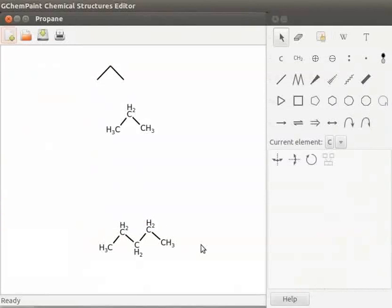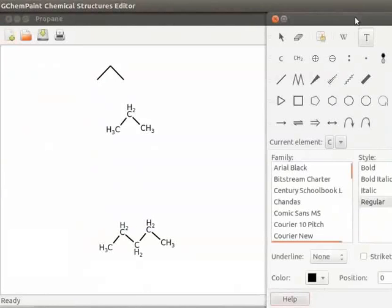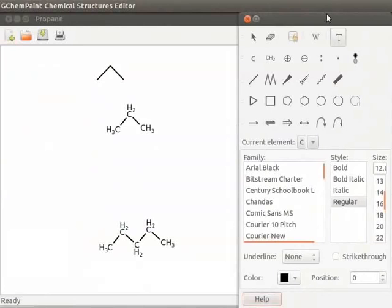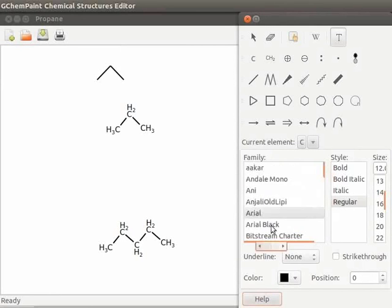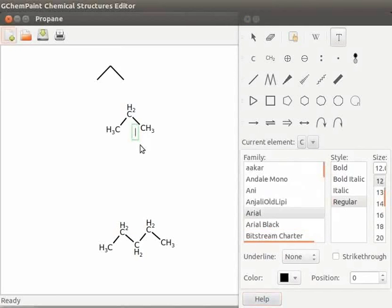Let us add some text below Propane structure. Select Add or modify a text tool from Toolbox. Text tool property page opens. The property page contains fields like Family, Style, Size, Underline and a few others. Family has a list of font names. I will select Arial Black from the family. Click on the display area below Propane structure. You can see a blinking cursor enclosed in a green box. Let us type the name of the compound as Propane.